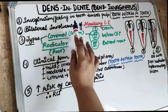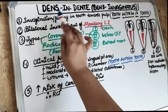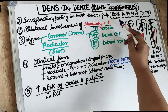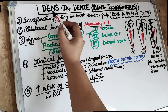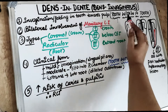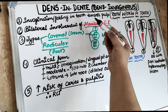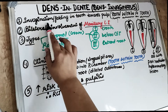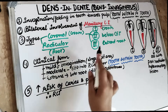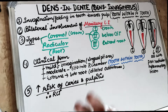As the name suggests, Dens in Denti means there will be a tooth within the tooth. Dens in Vaginatus means there will be an inward folding of the tooth — an invagination or folding present towards the inside of the tooth. So there is a tooth within the tooth, which gives a characteristic appearance on radiograph, where a second tooth-like structure is seen inside the tooth.